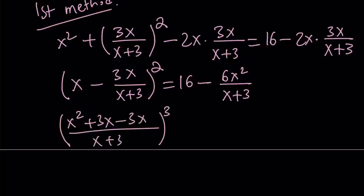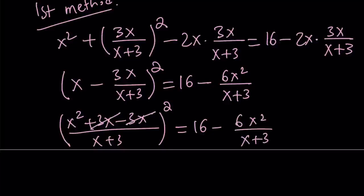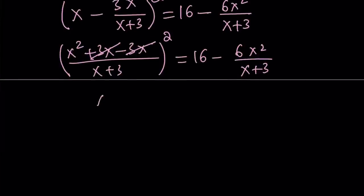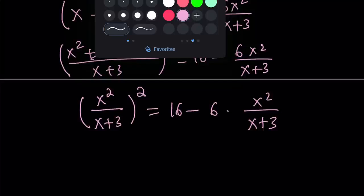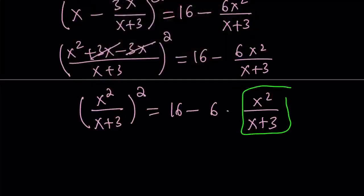3x cancels out. And on the right hand side, let's leave it at that for now. And now we're going to use substitution. Notice that the 3x cancels out and we end up with a nicer expression. So it becomes x squared over x plus 3, quantity squared, equals 16 minus — and I want to separate the 6 here so you can better see what I'm talking about. Notice that here I can use substitution. If I call this something — how about u — let's call this u, we get the following.